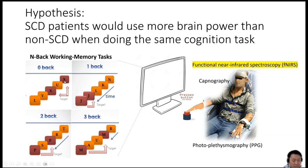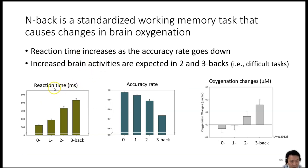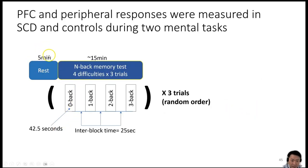0-Back means you press a button when there's a pre-specified letter — in this case, X. 1-Back means you press if the letter is the same as one turn before. In the 2-Back condition shown here, you press when the current letter is the same as two turns back. Due to the N-Back task, we would expect reaction time to increase as difficulty increases, accuracy rate to go down, and brain oxygenation to change more. Our study setup included a 5-minute resting period followed by an N-Back memory task with four difficulty levels and three trials each, ordered randomly, taking about 15 minutes total. We had a group of sickle cell disease patients and a control group, with a subset of SCD patients having a history of stroke.